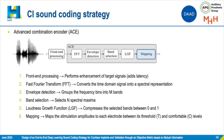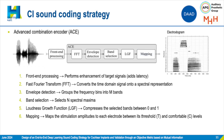And finally, the mapping block will map these compressed bands between the threshold and comfortable levels of the subject. At the output of the sound-coding strategy, we can see the electrodogram, which is a visual representation of the electrical stimulation that happens inside the cochlea. It specifically shows which electrode is being stimulated, when and by how much, depicted by the black marks inside the electrodogram.